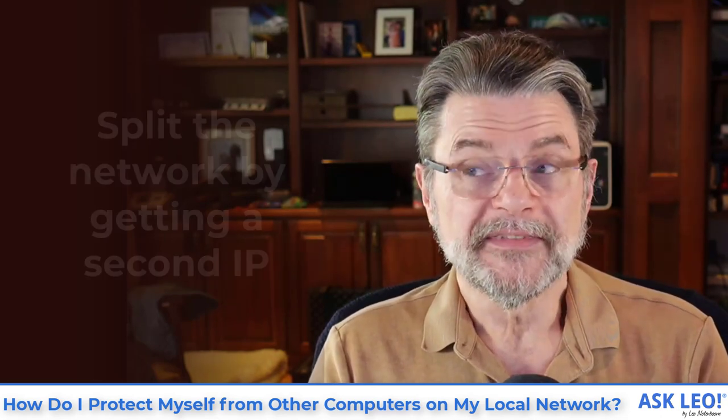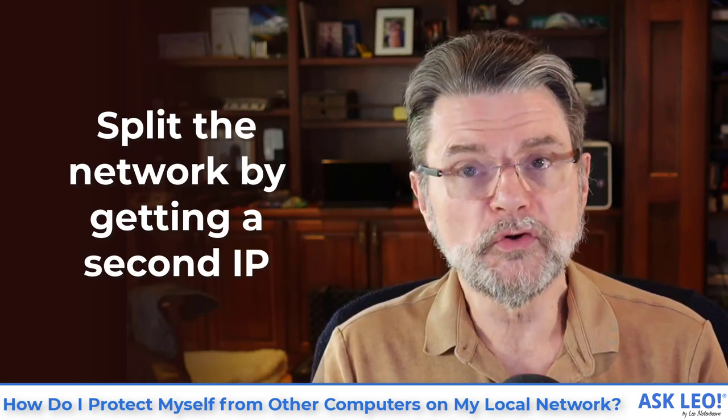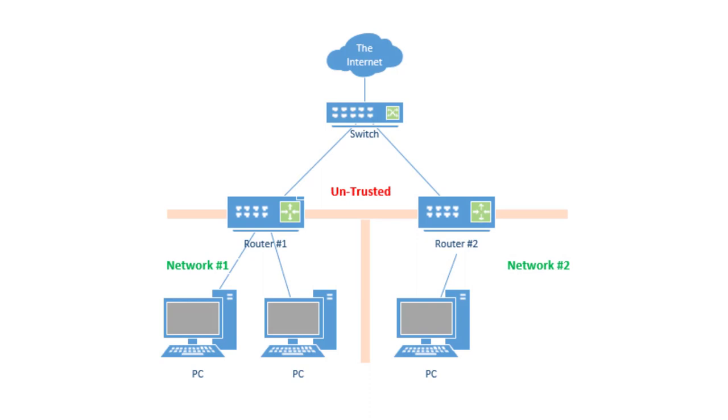Another approach — one that requires cooperation from your ISP — is to get two networks. This could be as simple as getting two IP addresses from your ISP across one connection and using a switch to connect two separate routers to two separate networks in your house. One network would be the fully trusted network and the other would be the untrusted or less trusted network, which could be wired or wireless. The two networks do not see each other — they are completely isolated and therefore protected from one another. Getting two IP addresses or a second Internet connection does require additional expense and ISP cooperation, so sometimes it's simply not reasonable.